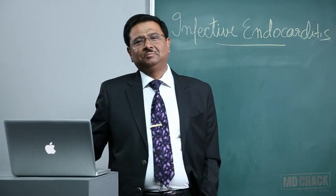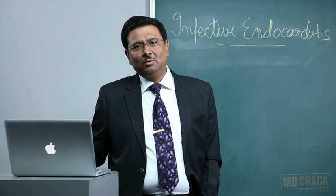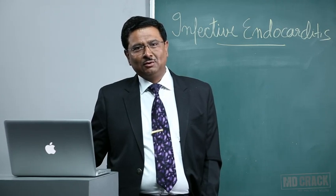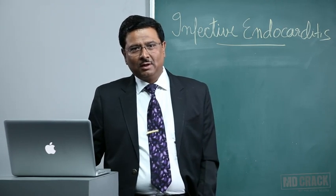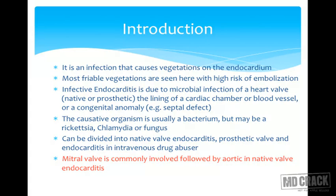Hello, dear students. We shall be talking about an interesting topic in the cardiovascular system: infective endocarditis. Infective endocarditis is an infection that causes vegetations onto the endocardium. The most friable vegetations are seen in infective endocarditis with high risk of embolization. It is due to microbial infection of a heart valve (native or prosthetic), a lining of a cardiac chamber or blood vessel, or a congenital anomaly like atrial septal defect.